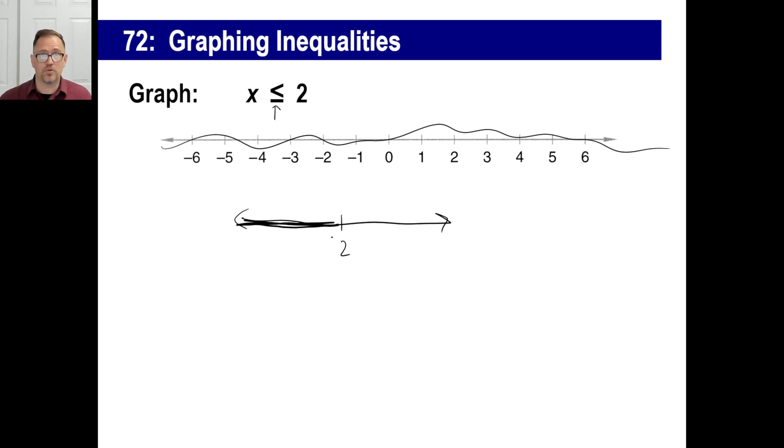But they're saying also that it can be equal to 2 as well. So if it can be equal to and it can include 2, what you're going to do, instead of having an open circle like that, you're going to have a closed circle. That shows that the person looking at this knows, oh, I can include 2 in my experiment with plutonium, okay? And that's basically it.